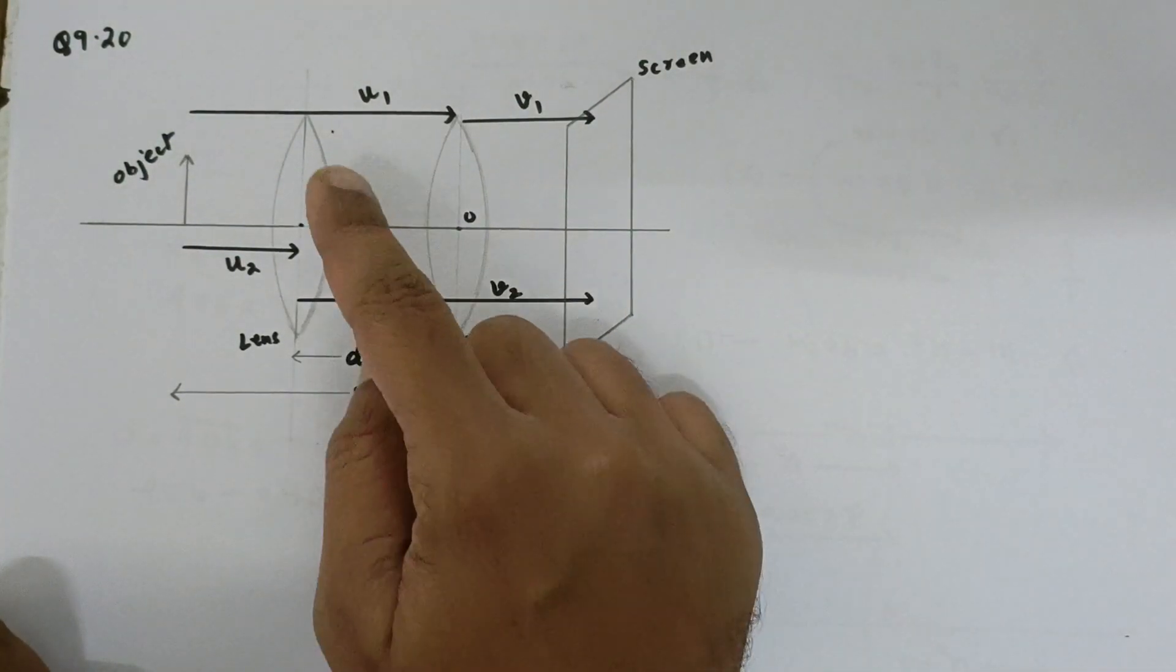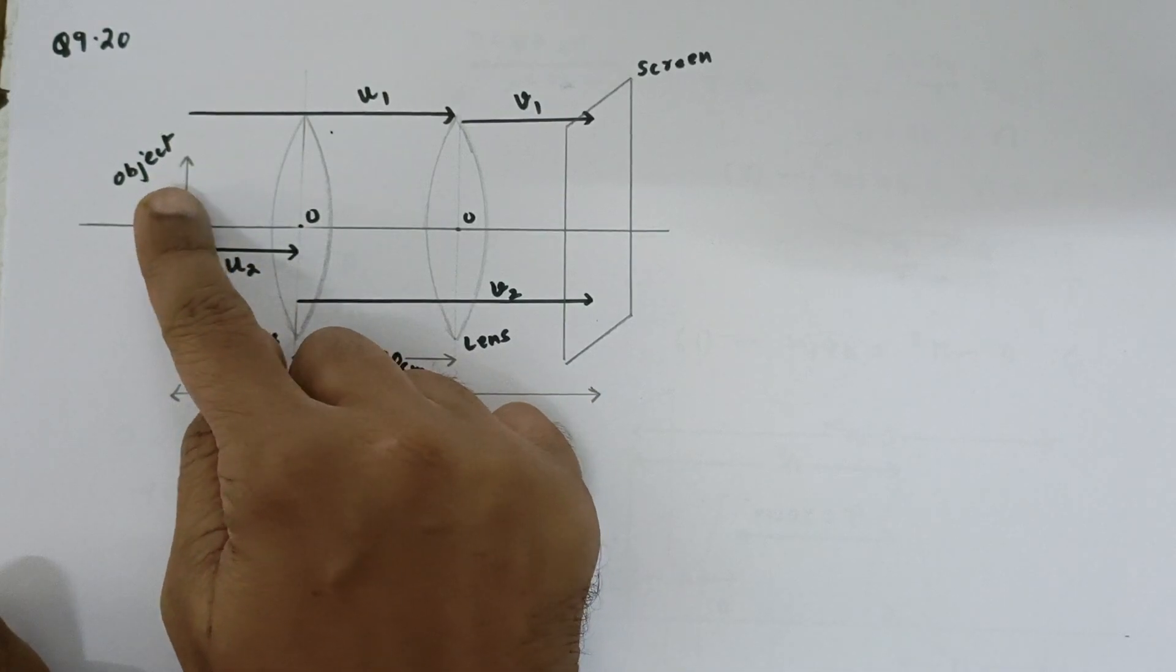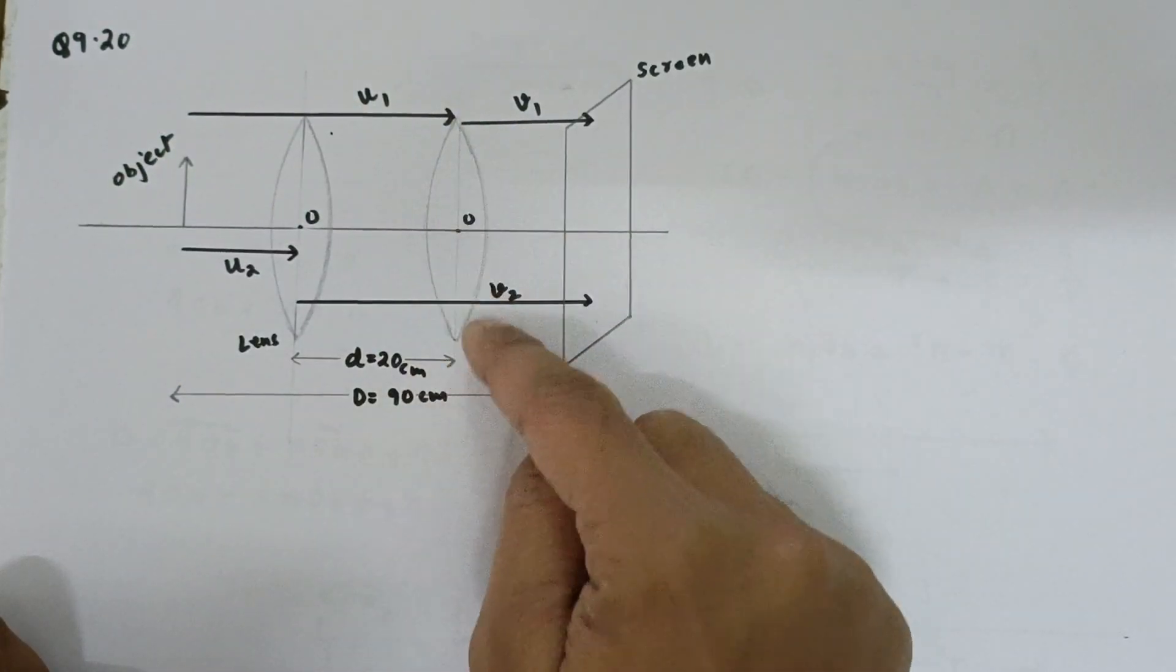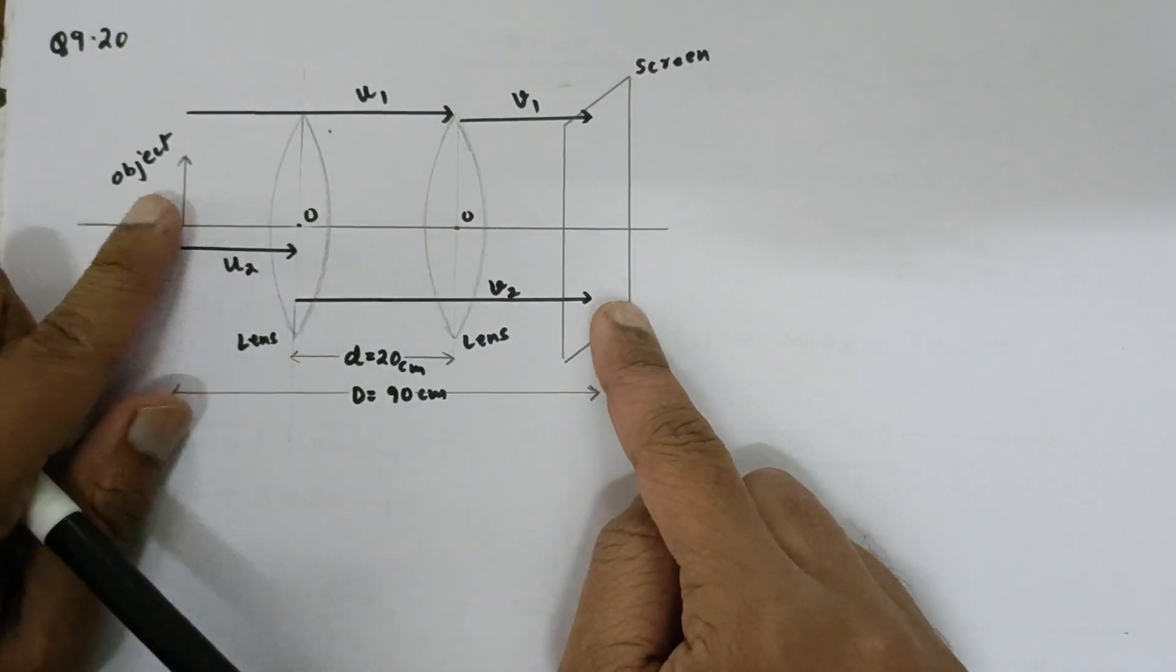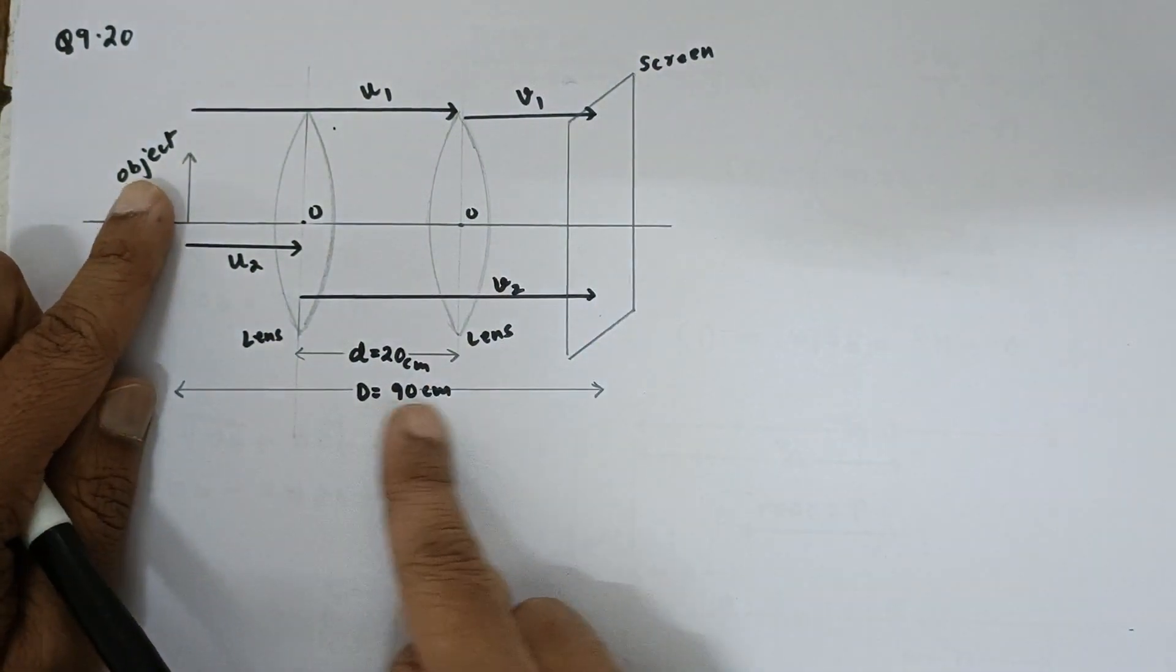The problem is very good and we are given that there is an object, there is a convex lens, its image is formed on the screen, the distance between the object and the image is given as 90 centimeters.